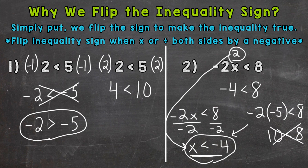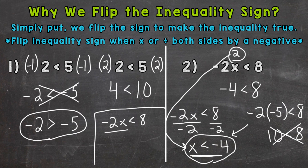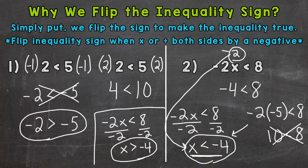So let's flip the sign. We had negative two times X is less than eight. Divide both sides by negative two, and we end up with X — flip the sign — greater than negative four. So X has to be greater than negative four. That two, which we proved was correct, will now work. Two is greater than negative four. So that gives us all the correct solutions for that inequality. Simply put, we flip the sign to make the inequality true. If we don't flip it, we're going to get incorrect solutions that do not work for the inequality.